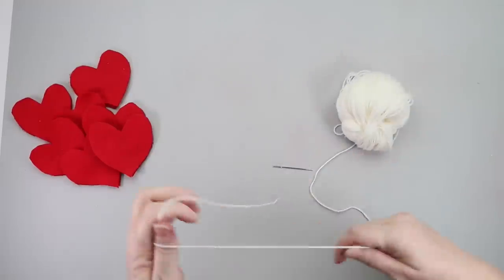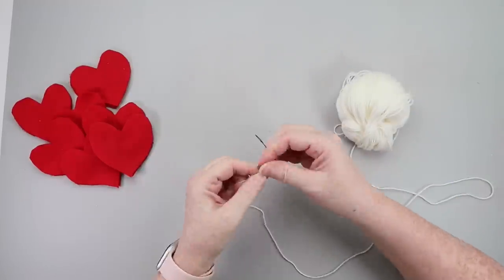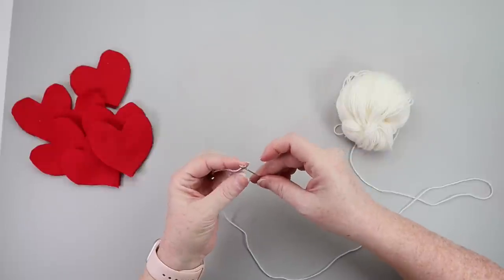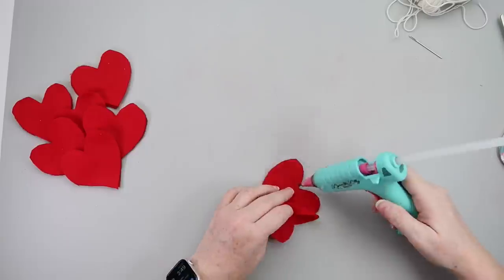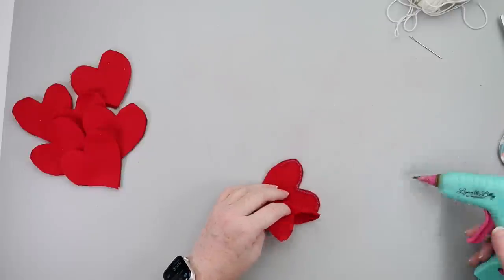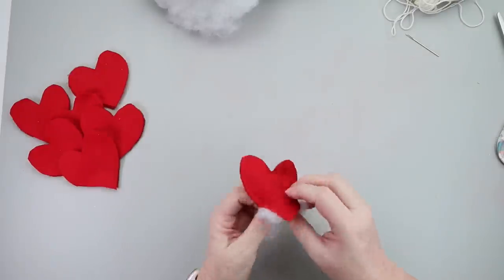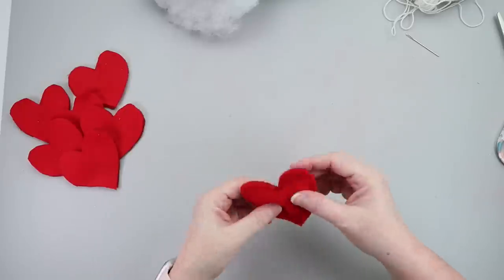Once the hearts were all cut out, originally my plan was to take some yarn and just do a running stitch around the edge, sewing two hearts together. But I quickly decided this is not the route I wanted to go. So I ended up starting by just hot gluing my heart until I got to the bottom of the heart and then I stuffed it with some pillow fluff.